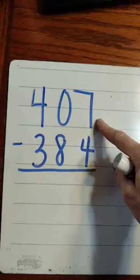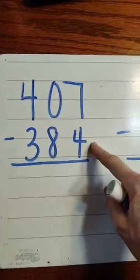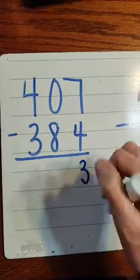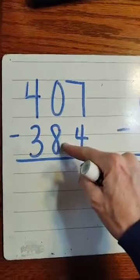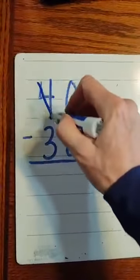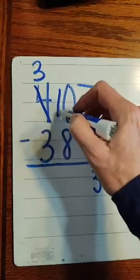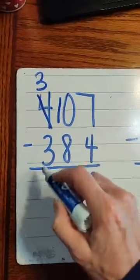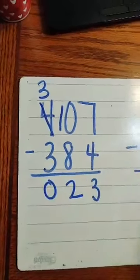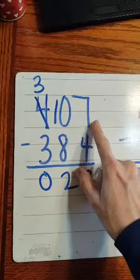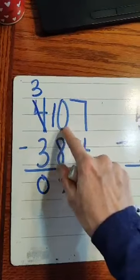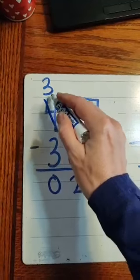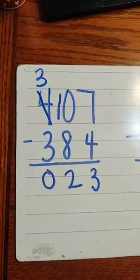Sometimes we look and we don't need to borrow to start with. 7 minus 4. You got it. 3. I go to my next one. Uh-oh, bigger bottom. I need to borrow. So I come over here. Make it 1 less. Give it a 10. 10 minus 8. 2. 3 minus 3. 0. So sometimes we don't have to borrow in the ones place, but we will have to borrow in the next place. So we do it the same way. We go next door to the one in front of it. We make it 1 less. We give a 10 to it.